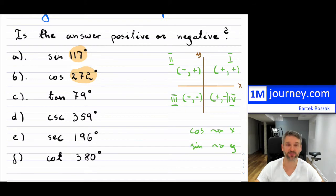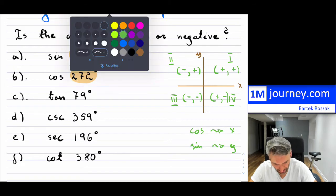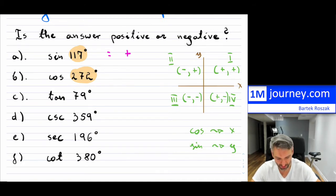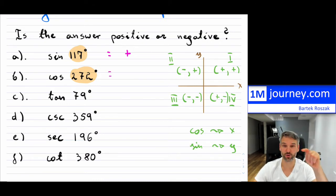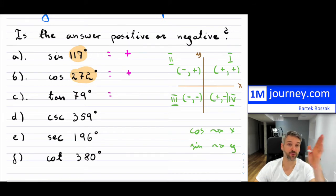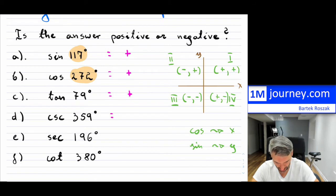In the fourth quadrant, cosine is positive but sine is negative because it's pointing downward. Based on that, I can quickly walk through the examples. 117 is in the second quadrant and we want sine — so this is positive. 272 is in the fourth quadrant and we want cosine — cosine is also positive in the fourth quadrant. Tangent of 79: 79 is in the first quadrant where sine and cosine are both positive, so tangent is also positive.